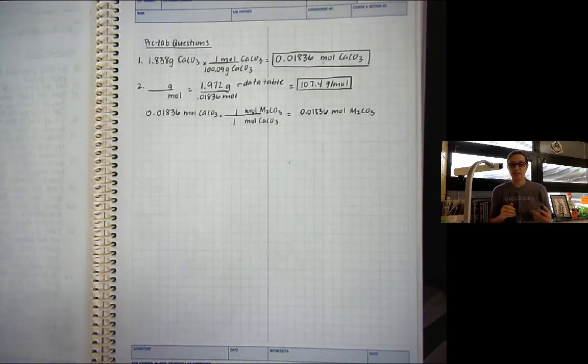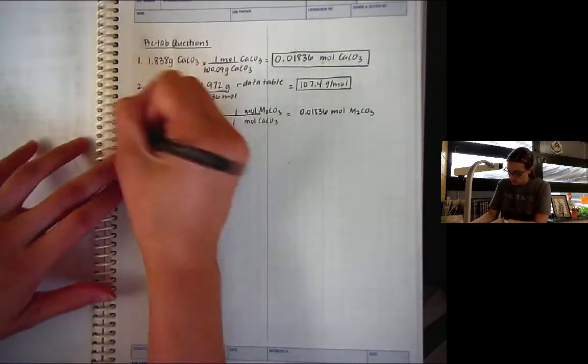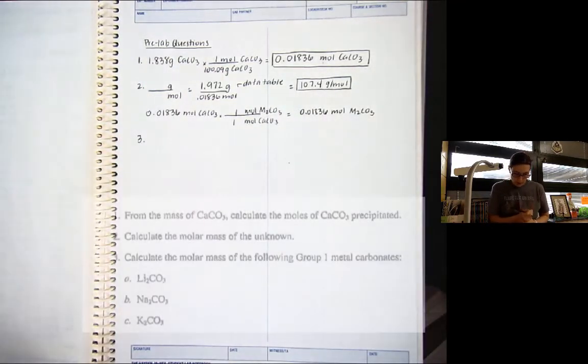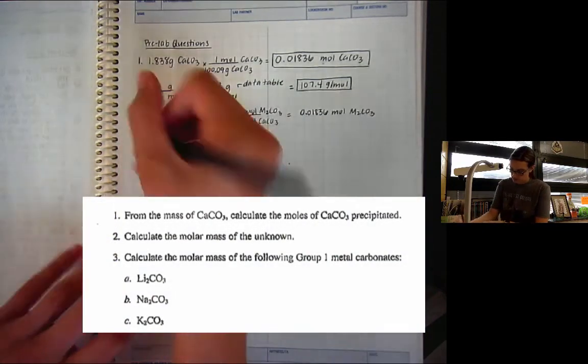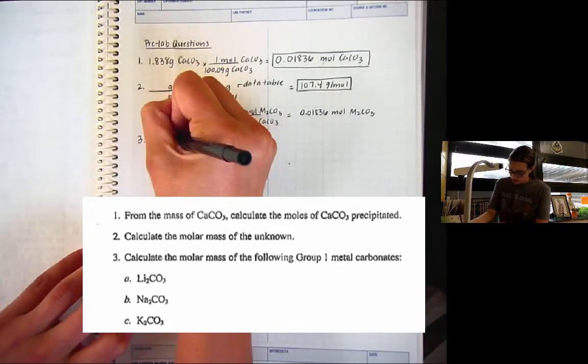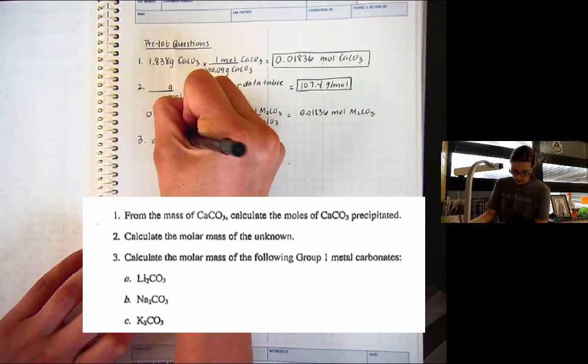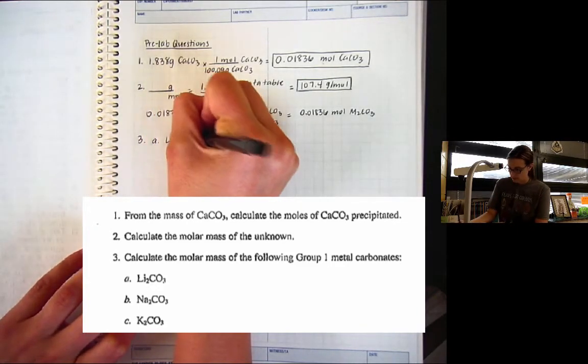The whole goal is to figure out, is this sodium carbonate or is this potassium carbonate? So pre-lab question number 3 says, Calculate the molar mass of the following group 1 metal carbonate. So 3A, you're going to be finding the molar mass for Li2CO3.